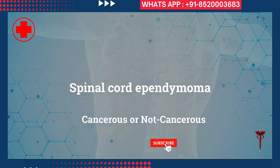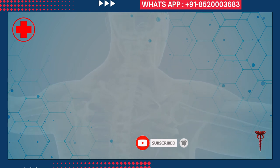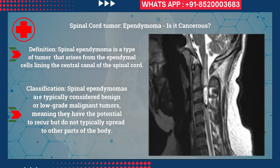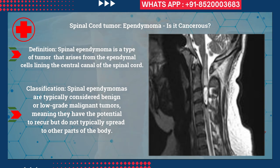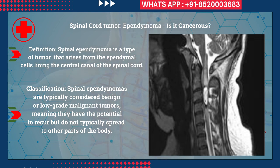Spinal cord ependymoma: cancerous or not cancerous? Spinal ependymoma is a type of tumor that arises from the ependymal cells lining the central canal of the spinal cord. Spinal ependymomas are typically considered benign or low-grade malignant tumors, meaning they have the potential to recur.